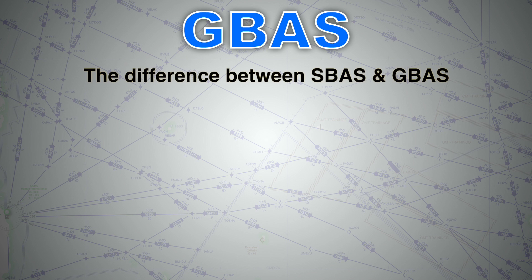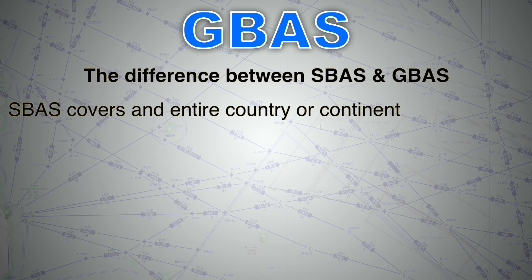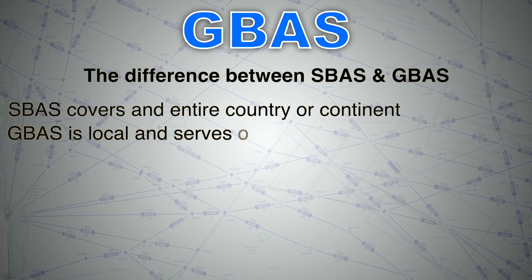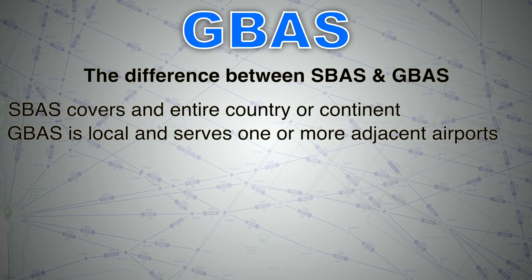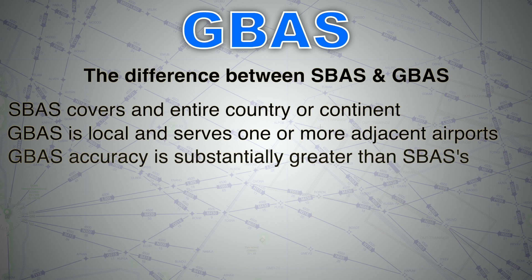Now let's look at the difference between SBAS and GBAS. SBAS, or Satellite-Based Augmentation System, covers an entire country or continent. There are multiple types: WAAS employed by the US, EGNOS by Europe, MSAS by Japan, GAGAN by India, and so on. GBAS, on the other hand, is a local-type augmentation system serving one or two adjacent airports. Previously GBAS was known as LAAS — Local Area Augmentation System. GBAS accuracy is substantially greater than that of SBAS.